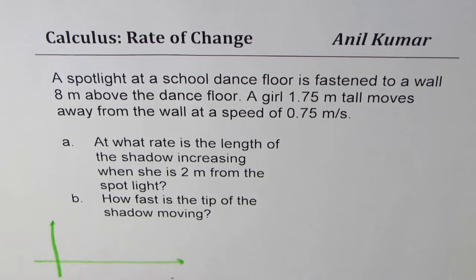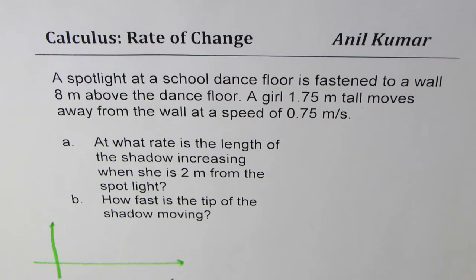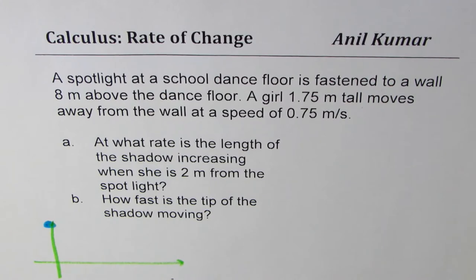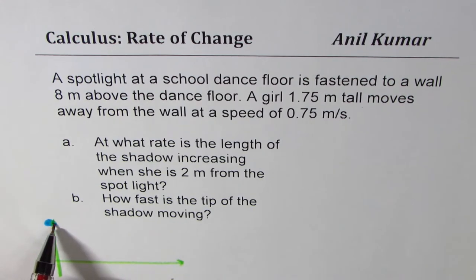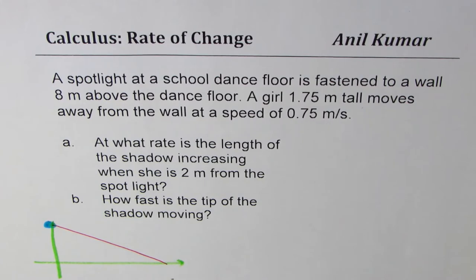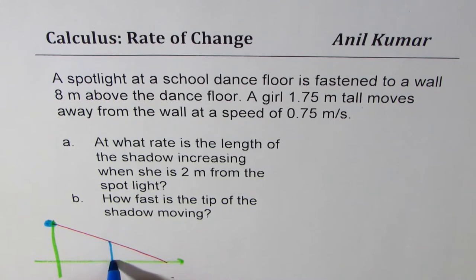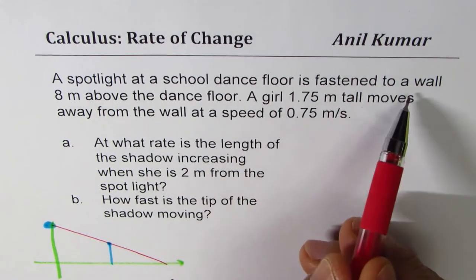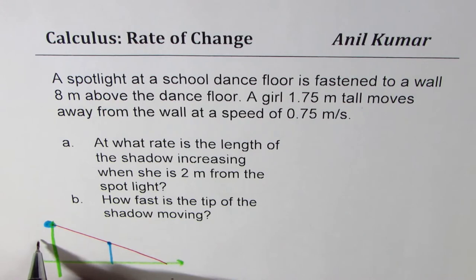Let me now show you the situation with the help of a graph. We have a spotlight 8 meters up on the wall — let's say that's the light. There is a girl walking away on the dance floor, and we're looking at the shadow she casts. The spotlight is 8 meters on the wall.